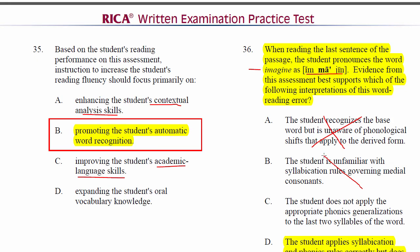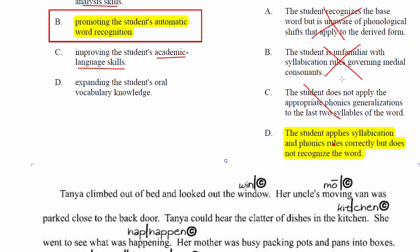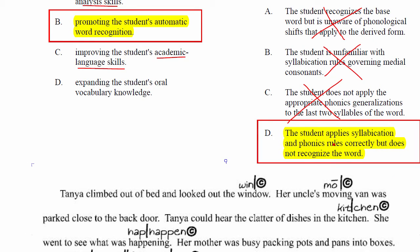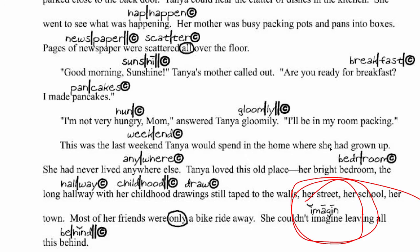Answer C — the student does not apply appropriate phonics generalizations to the last two syllables — is out because the pronunciation was described as correct in its phonetic application. The most correct is D: the student applies syllabication and phonics rules correctly but does not recognize the word. The big tip-off, even if you're having trouble with that phonetic alphabet, is to look at the self-corrections — they dominate this passage. The only one that wasn't self-corrected was 'imagine,' and there was a skipped word. When the student read it, it never registered.